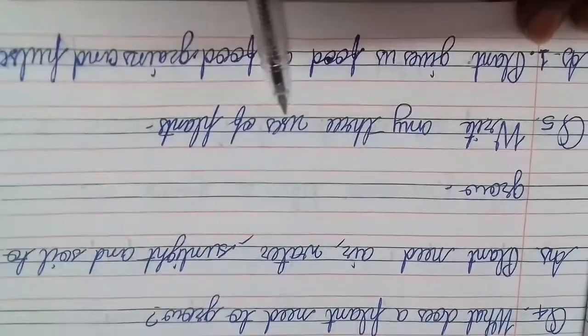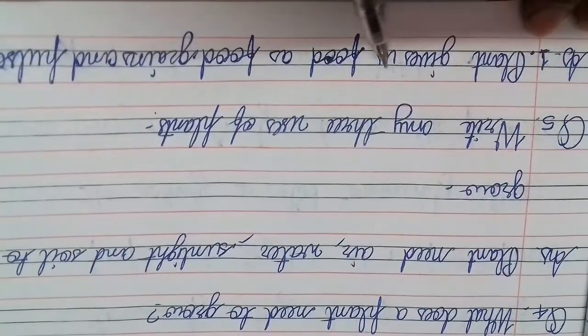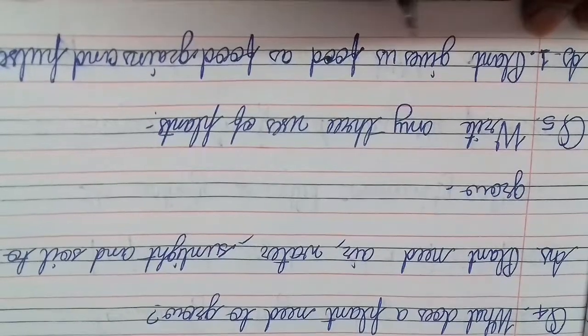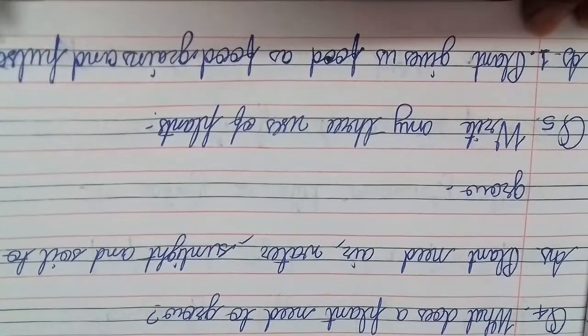Question five: Write any three uses of plants. First, plants give us food as food grains and pulses.